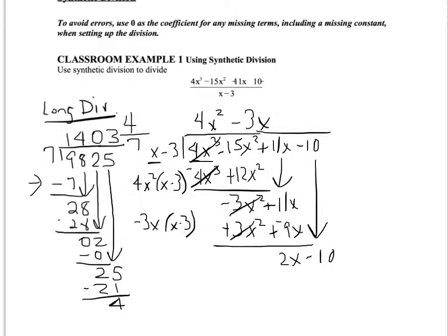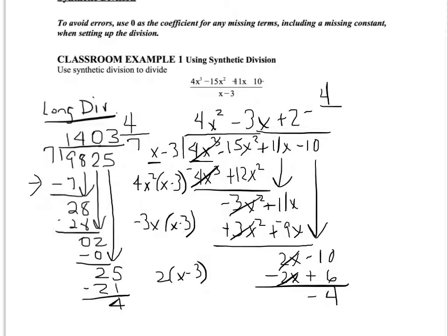The last term comes down: it's minus 10. x times what gives 2x? I need a plus 2, so multiply 2 times x minus 3, giving 2x minus 6. Be really careful here — this is where you're most likely to make a sign mistake. We're still subtracting, so change the signs: positive 2x becomes negative 2x, and negative 6 becomes positive 6. The x terms cancel and we have minus 4 as a remainder, written as the fraction minus 4 over x minus 3.